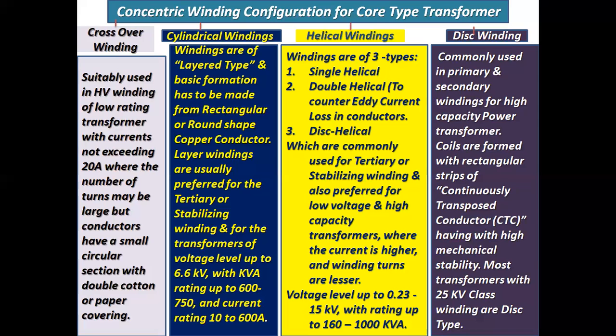Helical windings are of three types: single helical, double helical (to counter eddy current loss in conductors), and disc helical. These are commonly used for tertiary or stabilizing windings and preferred for low voltage, high capacity transformers where the current is higher and winding turns are lesser — voltage level up to 0.23 to 15 kV with rating up to 162,000 kVA.